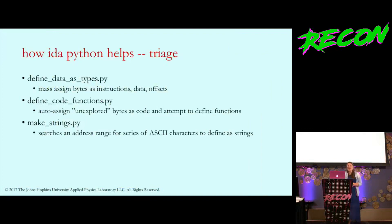The three triage scripts: first is define data as types. That can save you from monotonous data definitions. Or maybe you know there's probably code in this area based on the hex and entropy level. Define code functions will first identify and assign unexplored bytes as code, then tries to define each function based on the prologues and epilogues.